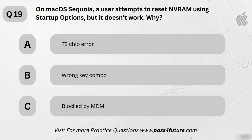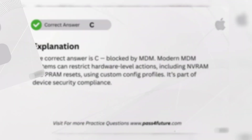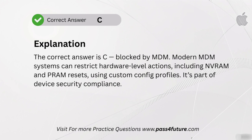On macOS Sequoia, a user attempts to reset NVRAM using startup options, but it doesn't work. Why? A. T2 chip error. B. Wrong key combo. C. Blocked by MDM. The correct answer is C — blocked by MDM. Modern MDM systems can restrict hardware-level actions, including NVRAM and PRAM resets, using custom config profiles. It's part of device security compliance.